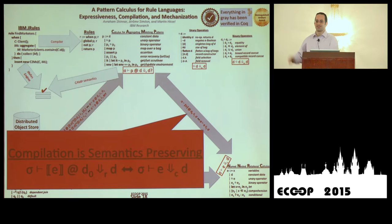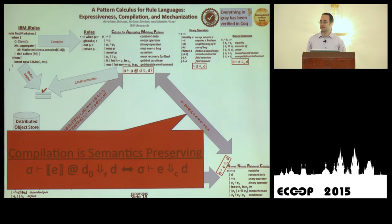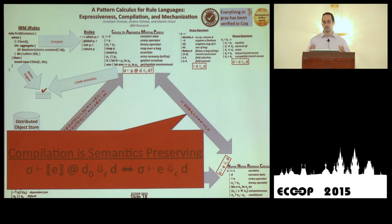We now have a complete cycle: CAMP → NRA → NNRC → CAMP, with all compilers shown semantics-preserving. As a side point, this has the interesting benefit of showing NRA and NNRC are equally expressive — which is well-known in the database community. NRA to NNRC is fairly simple, but going the other way is surprisingly difficult to find worked-out proofs for. This is the first mechanization we know of that shows this correspondence. Additionally, all compilers provably produce code that is at most a constant size larger than their input — no exponential blowup.